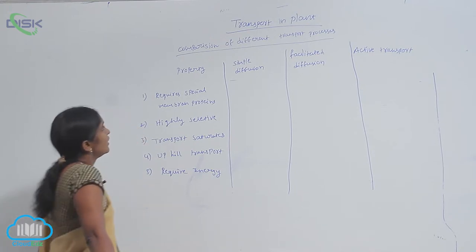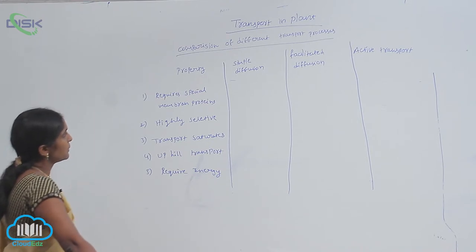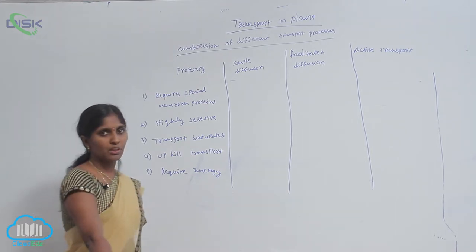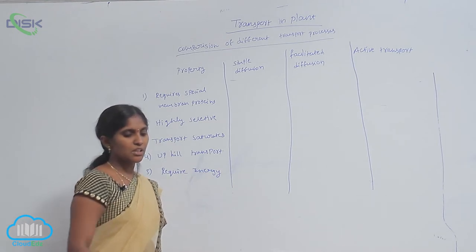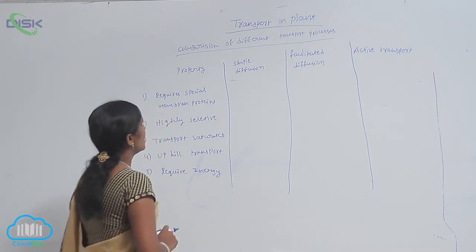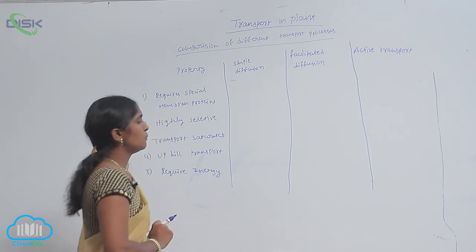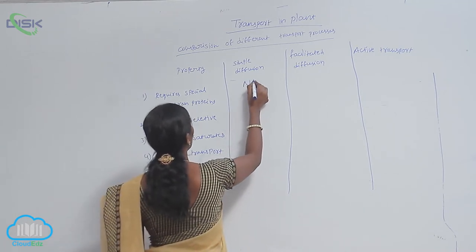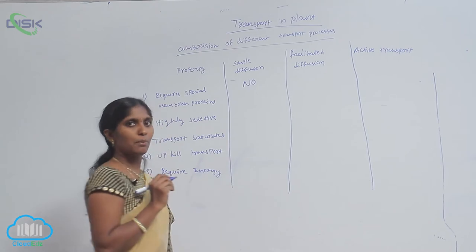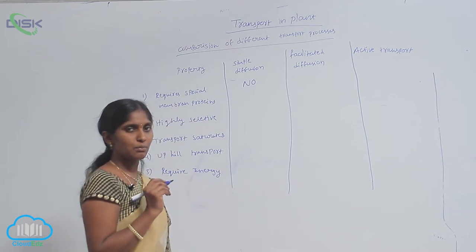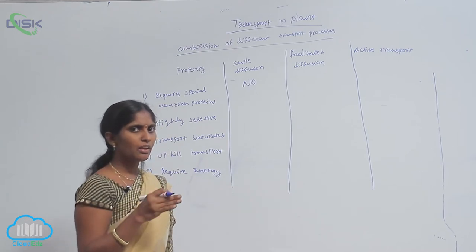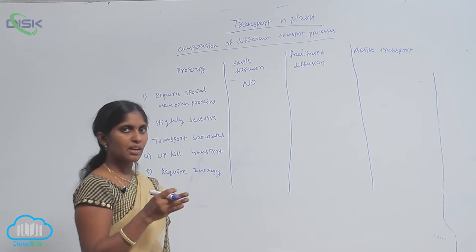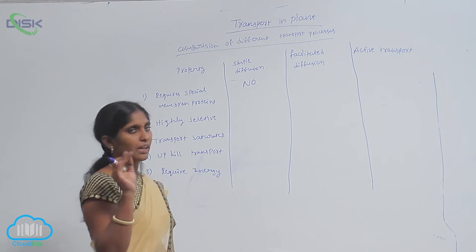In the comparison, the first property is 'requires special membrane proteins.' For simple diffusion, the answer is no — it does not require any special type of proteins because the diffusion is carried out without any medium or proteins.